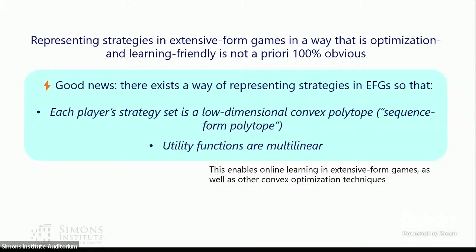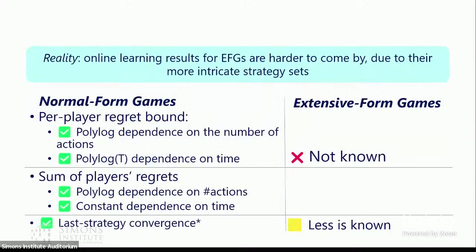This seems good, but online learning results for extensive form games are harder to come by due to the more intricate strategy set. For a normal form game we only have a simplex, but for extensive form games we have more complicated polytopes with a combinatorial structure. For example, the strong properties of optimistic multiplicative weights for normal form games are not known to be achievable in extensive form games — sometimes not individually, let alone all at the same time.